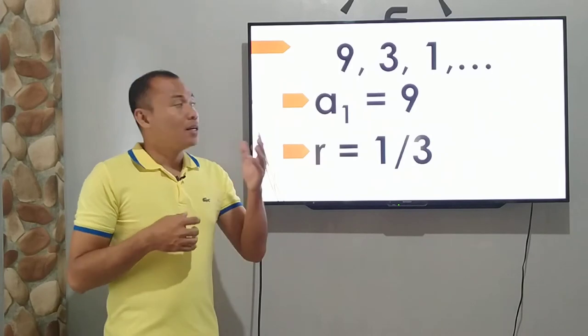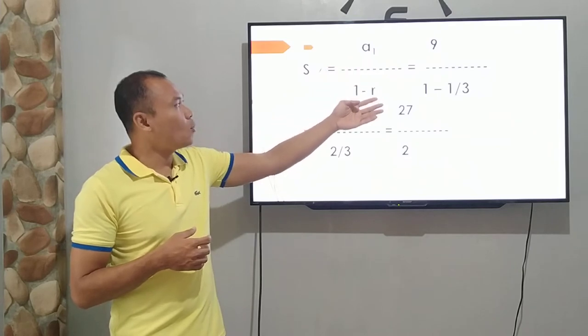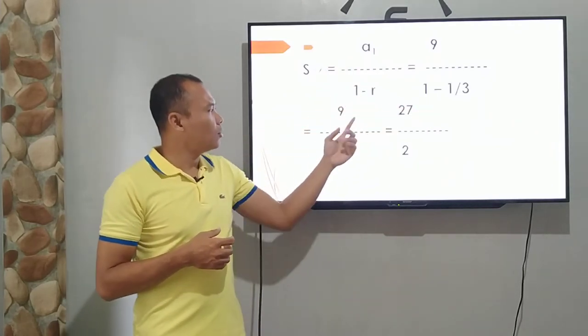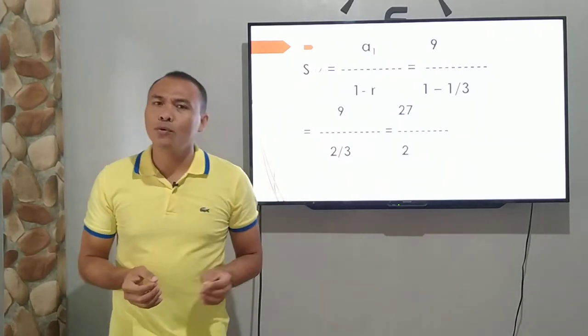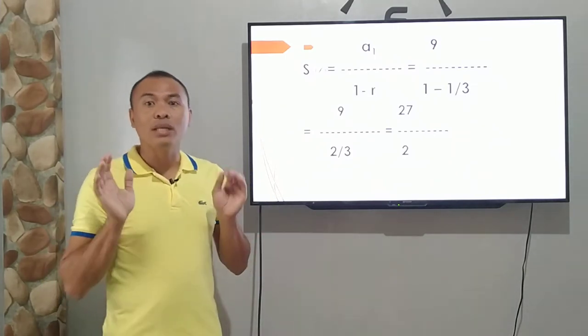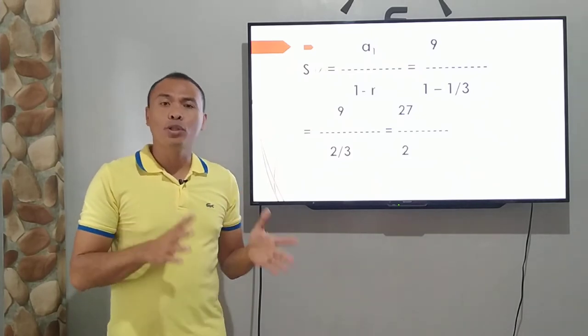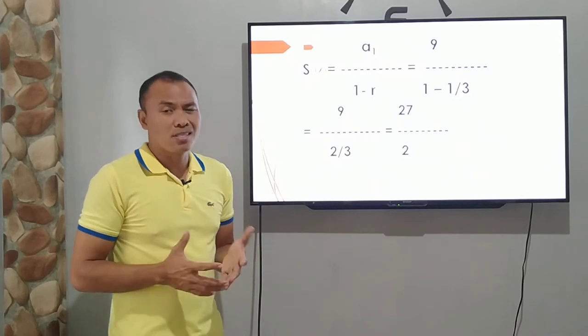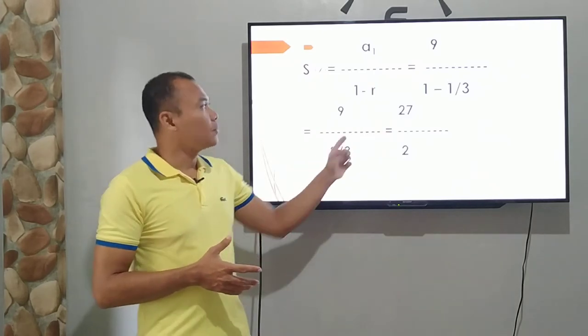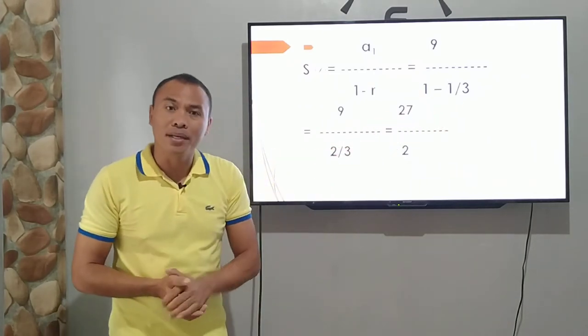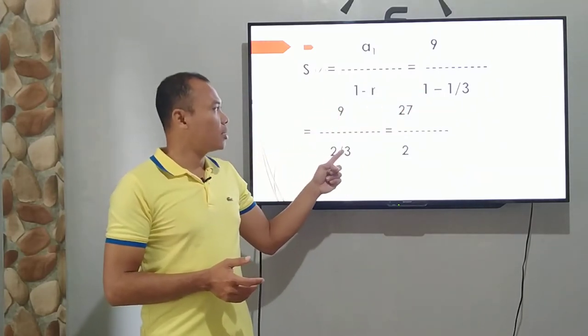And simply substitute to the formula. The first term is 9 and 1 minus 1 third. Bakit naging 2 thirds? Ganito siya kadali. Ito ay tinuturo sa inyo nung elementary kayo. Kaya kayo nahihirapan when it comes with adding or subtracting and even multiplying and dividing fractions. So we have 2 thirds. 3 times 1, what is 3 times 1? It's 3. 3 minus 1 is 2. Kaya nagkaroon tayo ng 2 over 3.